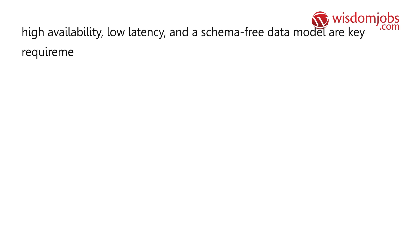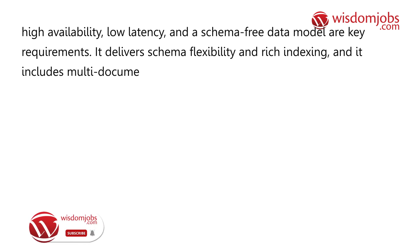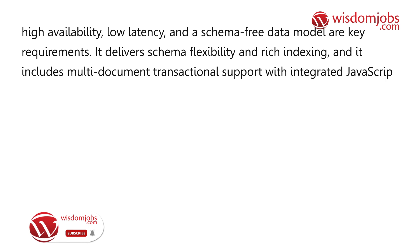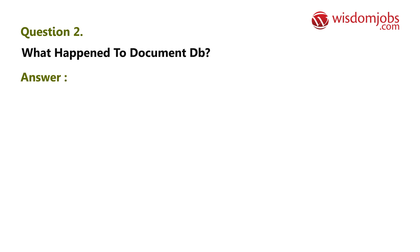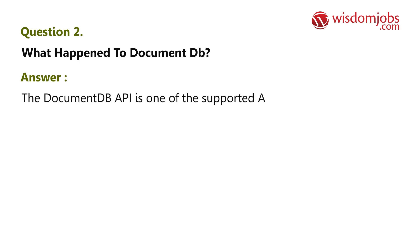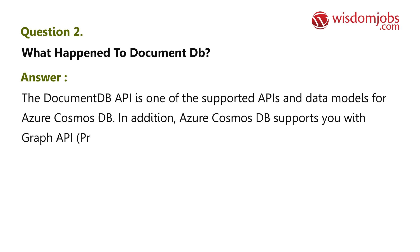Azure Cosmos DB is ideal when predictable throughput, high availability, low latency, and a schema-free data model are key requirements. It delivers schema flexibility and rich indexing, and includes multi-document transactional support with integrated JavaScript. Question 2: What happened to DocumentDB? Answer: The DocumentDB API is one of the supported APIs and data models for Azure Cosmos DB.